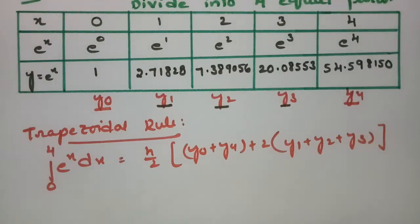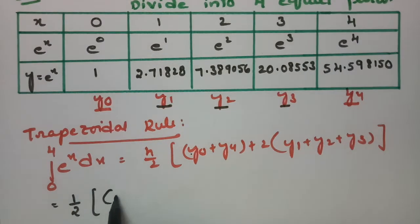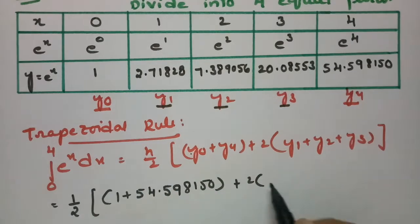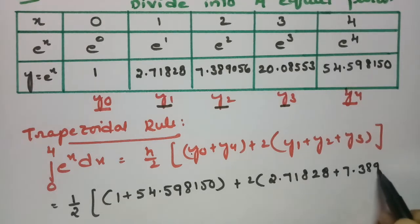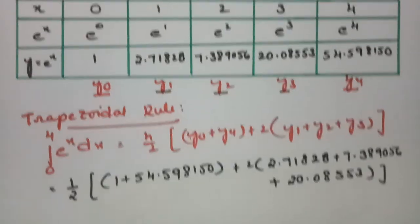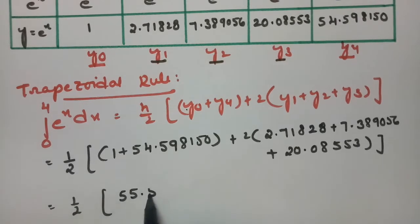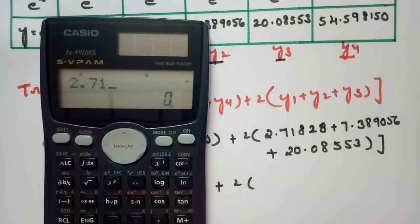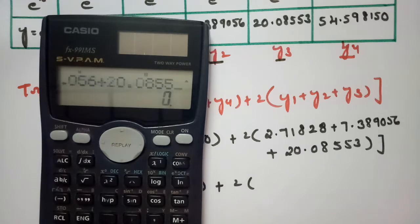Now I have to substitute all the values. h is 1, so this is 1/2 times (1 + 54.598150) plus 2 times (2.71828 + 7.389056 + 20.08553).